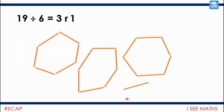Whereas if you're doing 19 divided by 6, you're not thinking 'I'm going to split 19 into 6 equal groups,' but more likely you're going to be counting up in 6s. How many 6s in 19? I like using matchsticks for that one. 3 remainder 1 — 3 lots of 6 is 18, 1 left over.